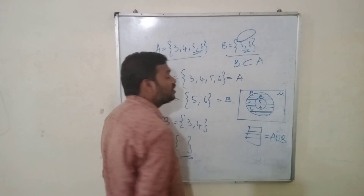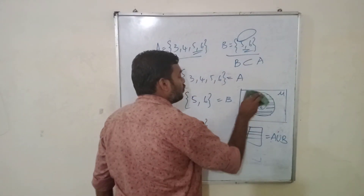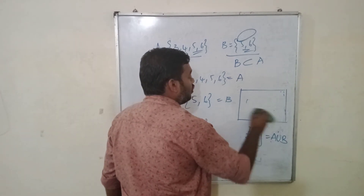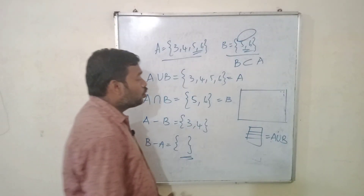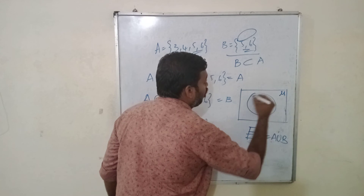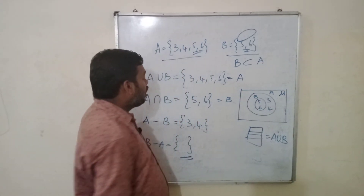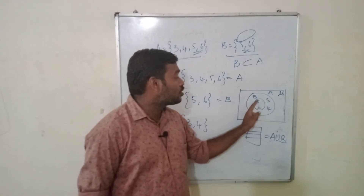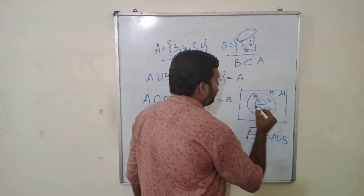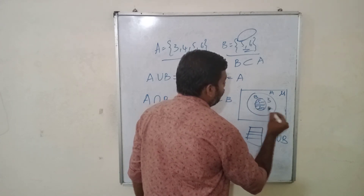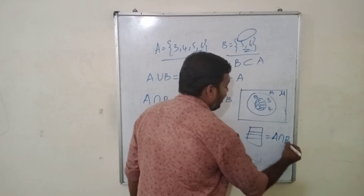This is the shaded region which is A union B. Let's go for A intersection B. What is A intersection B? That is the common elements present in A and B. In the Venn diagram, taking the universal set with A containing B inside it, write A, B, 3, 4, 5, 6. The part that is common in A and B is the entire B. B is common in A and B. So draw and shade that — this part is A intersection B, and the shaded region is A intersection B.